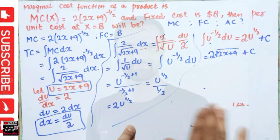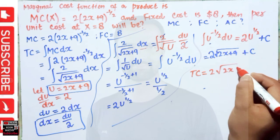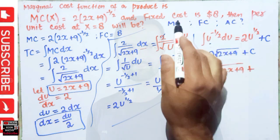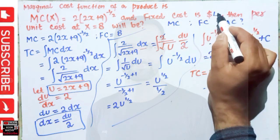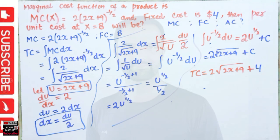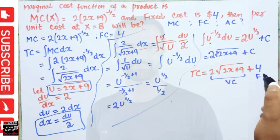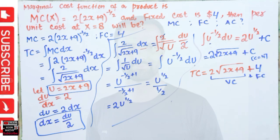Coming back to the question: we got total cost = 2√(2x+9) + C. In economics, this constant of integration C represents our fixed cost. The fixed cost is 4, so C = 4. This term represents the variable cost and this is our fixed cost; total cost is the aggregate of variable cost and fixed cost. So TC = 2√(2x+9) + 4.